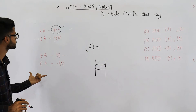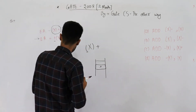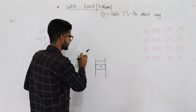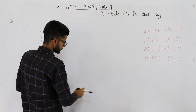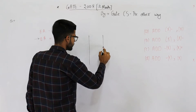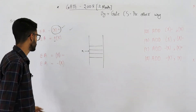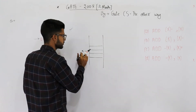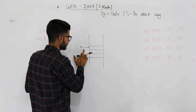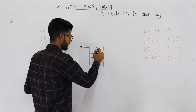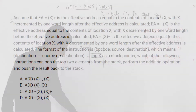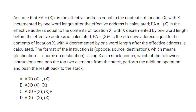EA = -x means your effective address lies at the location previous to x, one location before x. Say this location is x — what we do is first decrement x, making x point to the previous location, then fetch the address from that location. So EA = -x is the effective address equal to the contents of location x with x decremented by one word length before the effective address is calculated. Similarly, EA = x- means x is decremented by one word length after the effective address is calculated.